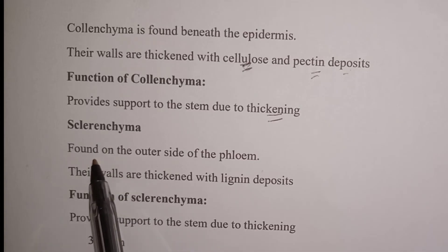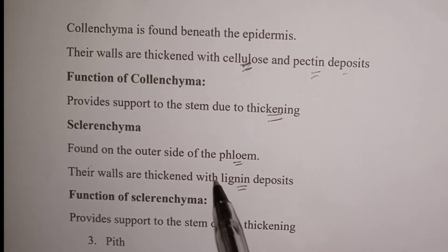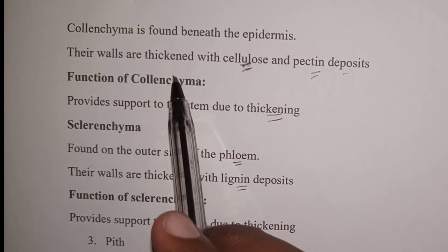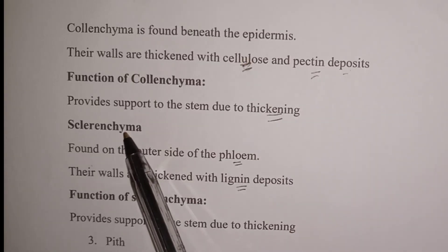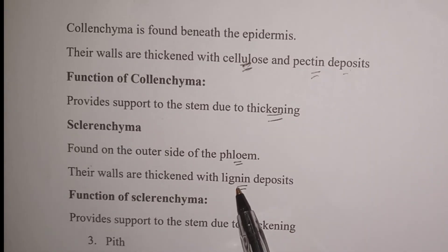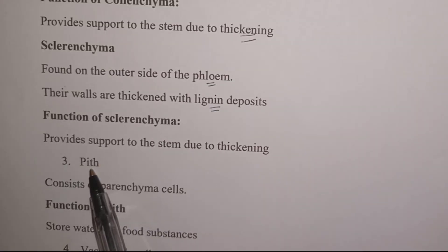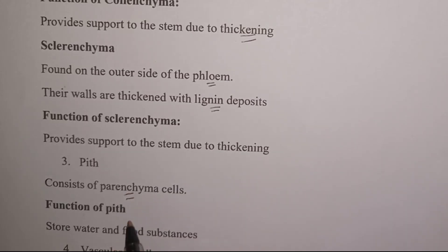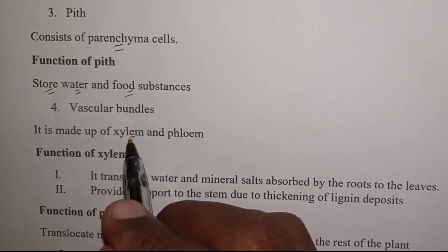Sclerenchyma is found on the outer side of the phloem. Their walls are thickened with lignin deposits. The difference between sclerenchyma and collenchyma is that for collenchyma the thickening is due to cellulose and pectin, while for sclerenchyma it is due to lignin deposits. The function of sclerenchyma is to provide support to the stem. Number three, the pith — it consists of parenchyma cells, and its function is to store water and food substances.